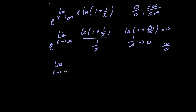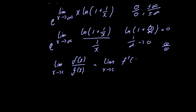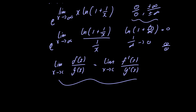L'Hôpital's rule says that if you have a limit of that indeterminate form, you can rewrite it as the limit as x approaches c of the derivative of f(x) divided by the derivative of g(x). The conditions required are that f and g are both differentiable at c, and that the limit is of indeterminate form 0 over 0 or plus or minus infinity over plus or minus infinity. In our case, both conditions are satisfied.